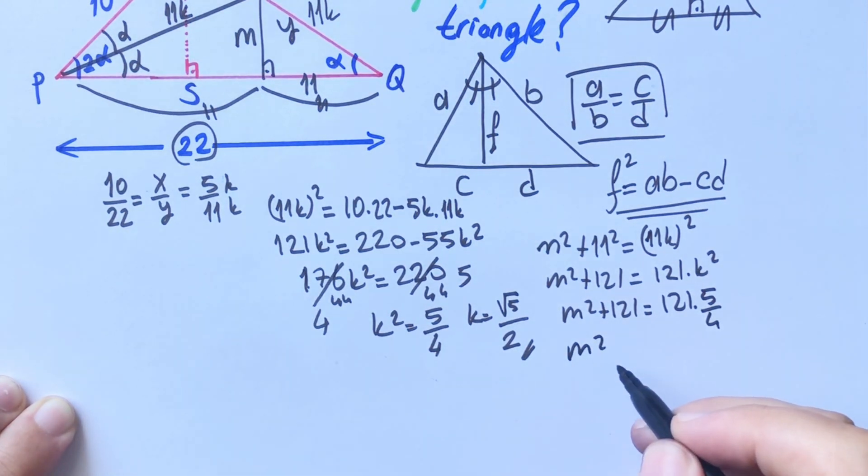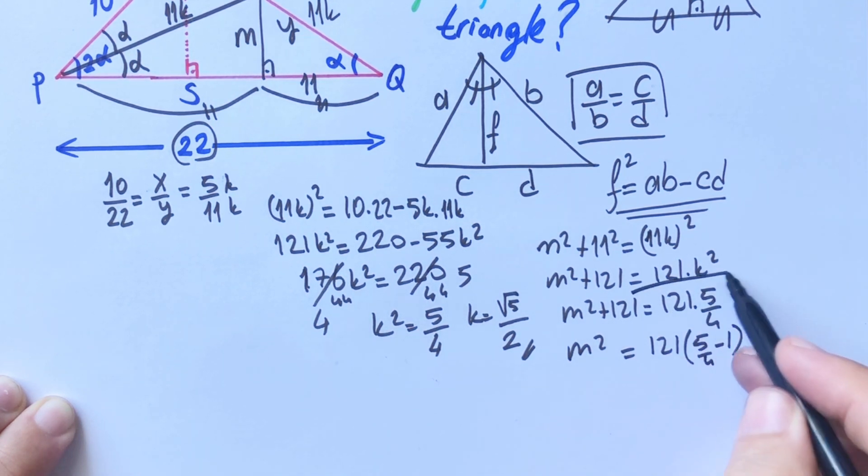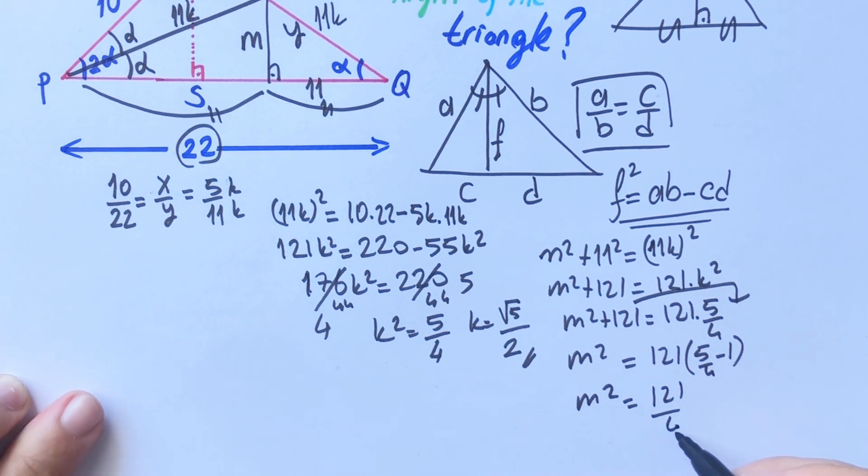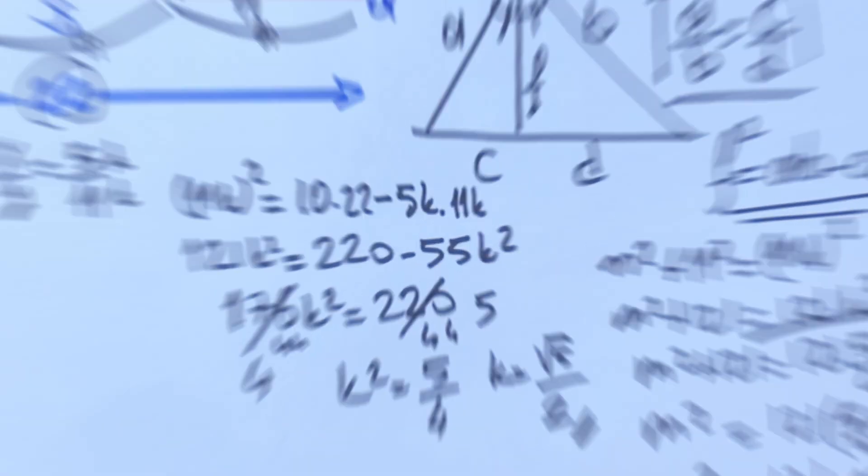M squared plus 121 equal 121 k squared is 5 over 4. M squared equal, if we take it in parenthesis 121, so M squared is equal 121 over 4. So M is going to be 11 over 2.